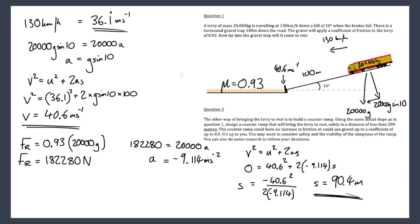For the open-ended design question, various solutions are possible: a steep ramp to slow it using the component of gravity along the slope, a slope with gravel on it, or a stepped slope with an increasing gradient.